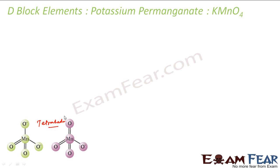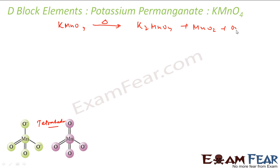Manganate and permanganate are also interconvertible. For example, if you take KMnO₄ and heat it, you get K₂MnO₄, MnO₂, and oxygen — so permanganate converts to manganate. MnO₄²⁻ is green, tetrahedral, and paramagnetic. MnO₄⁻ is dark purple, tetrahedral, and also paramagnetic. The only difference is the color.